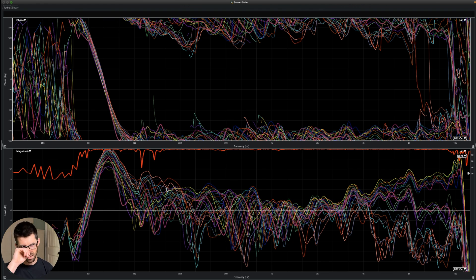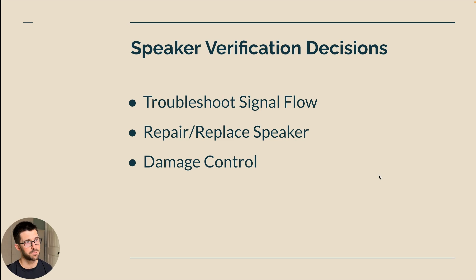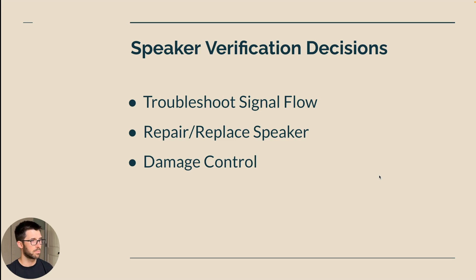This is also a bunch of measurements of 24 different RCF HDL6As all in a stack. I quickly verified they were all working — I placed them all on the floor like I did the K12. You can see there's variation due to ground bounce and path lengths, but they're all tracking really similarly. The decisions we need to make about speaker verification include troubleshooting the signal flow — are we getting a single speaker that looks different from the rest? We need to make sure the signal flow is right all the way from the console to the DSP to the speaker. We might need to repair or replace the speaker, or use EQ for damage control.